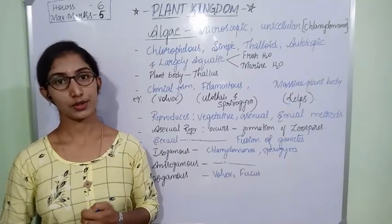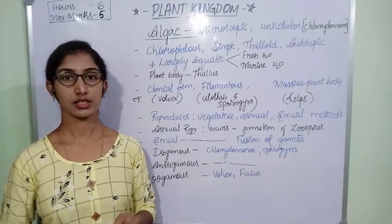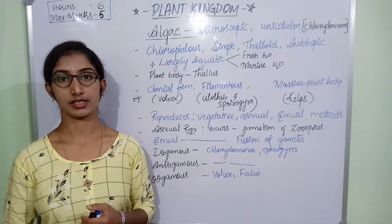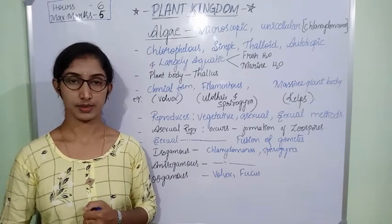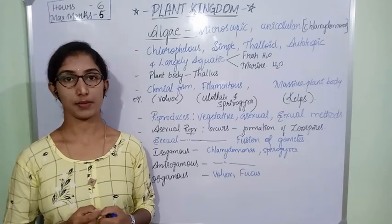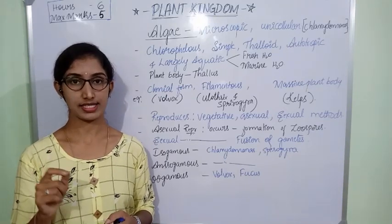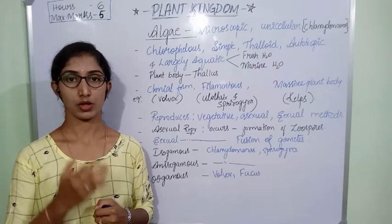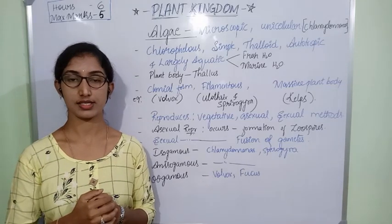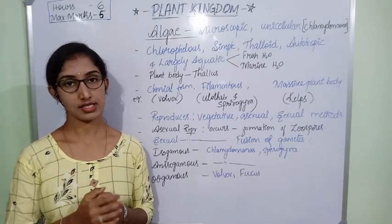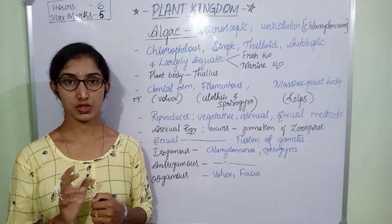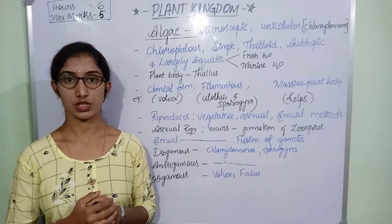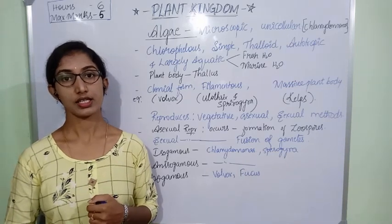In this part we are going to discuss about the classifications which come under the plant kingdom. In the previous class we discussed about the systems of classification and came to know about three different types: the artificial system of classification, the natural system of classification, and the phylogenetic system of classification.